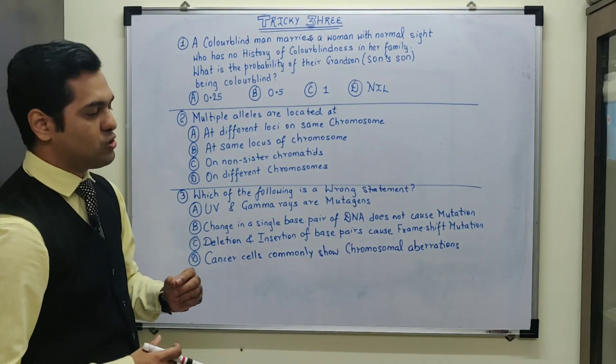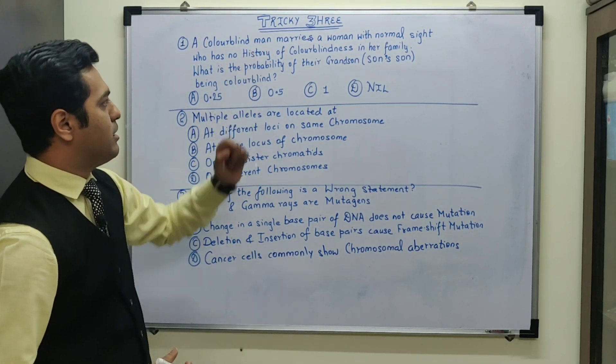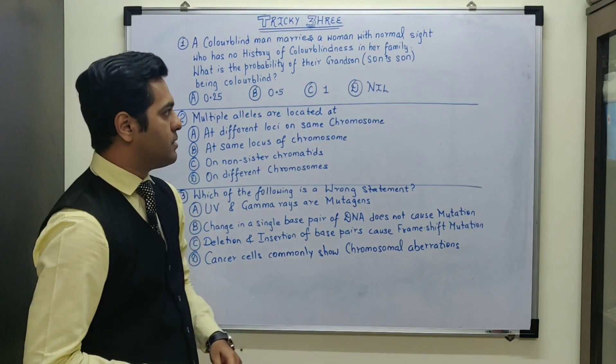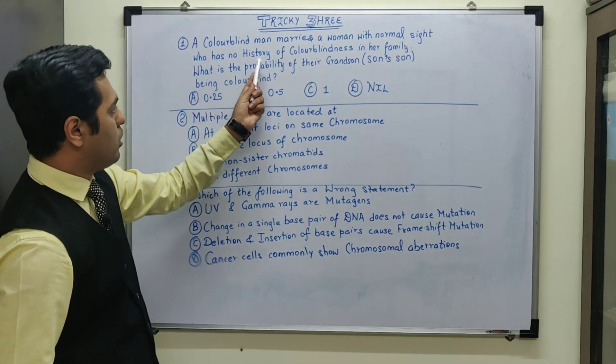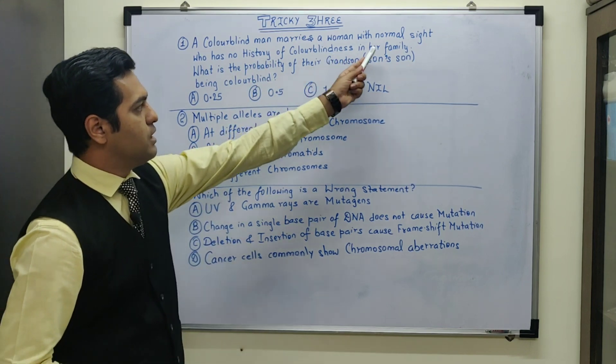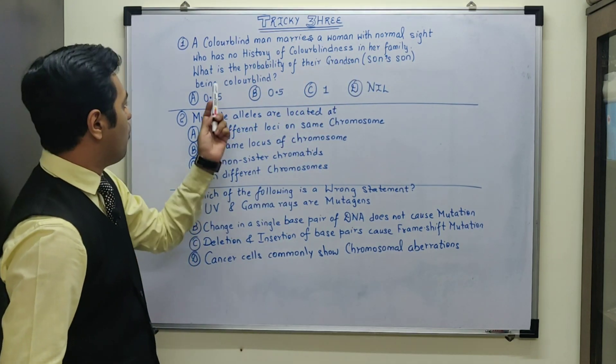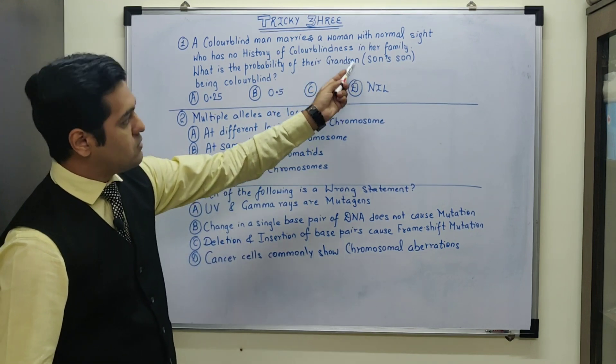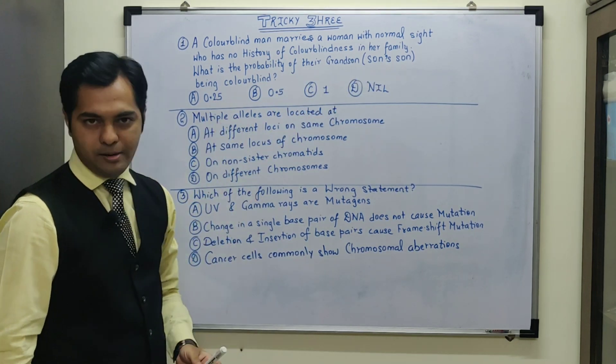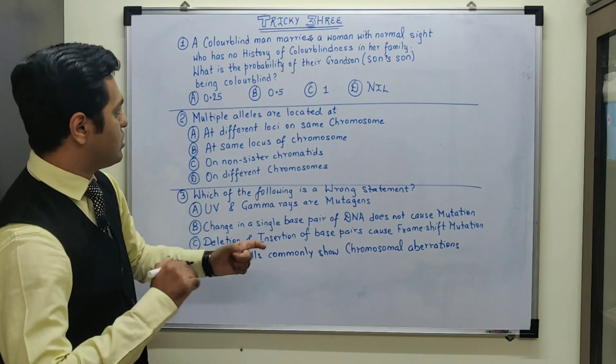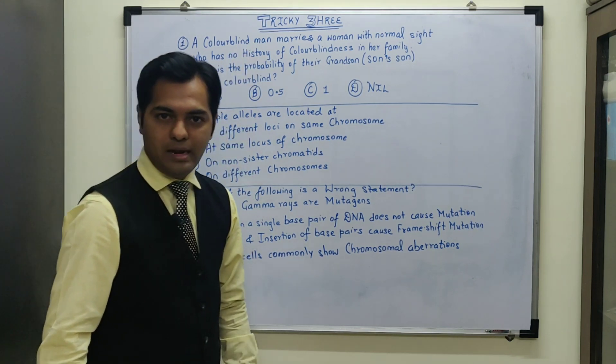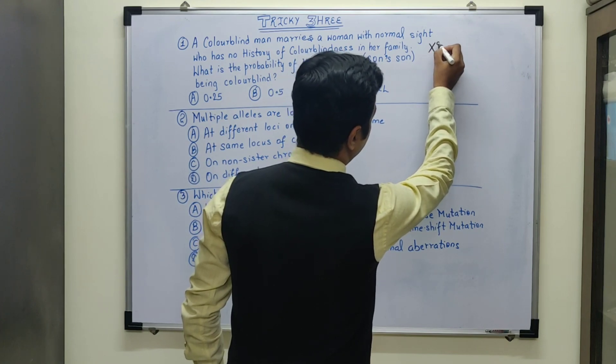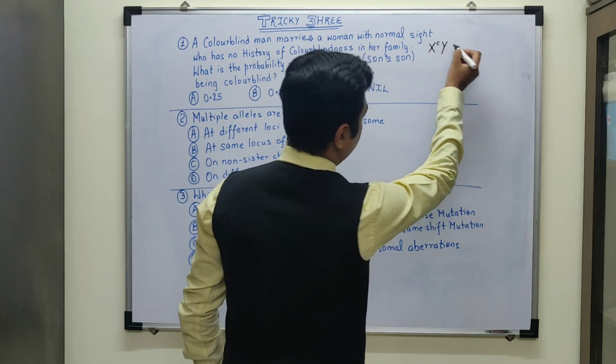The first MCQ says that a colorblind man marries a woman with normal sight who has no history of colorblindness in her family. What is the probability of their grandson, son's son, being colorblind? The man is colorblind, so he will have the genotype X small c, the recessive gene, and Y chromosome.